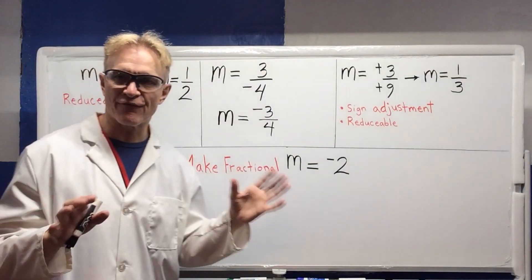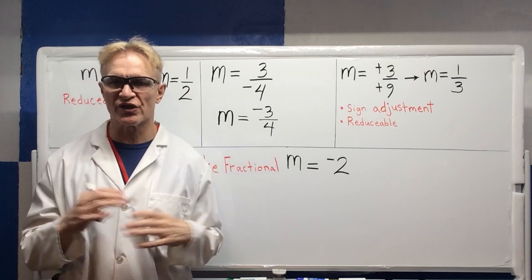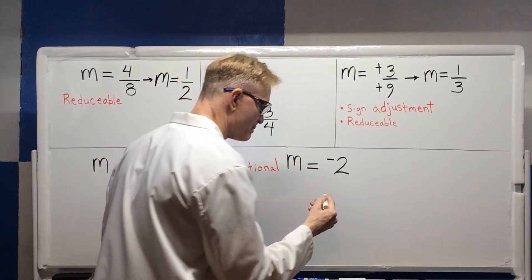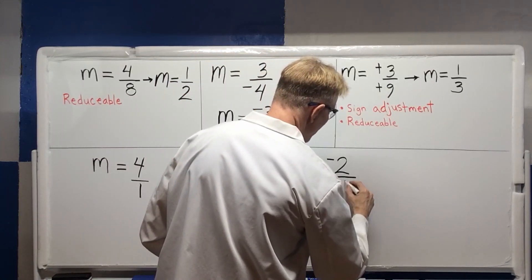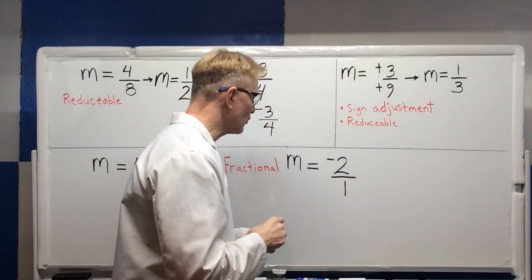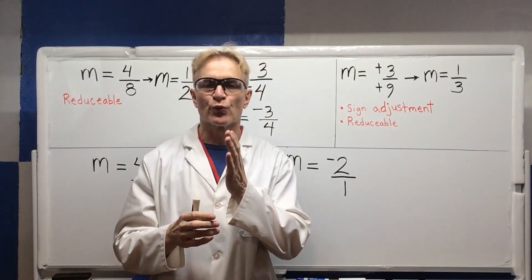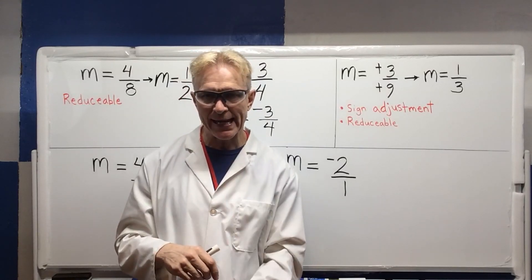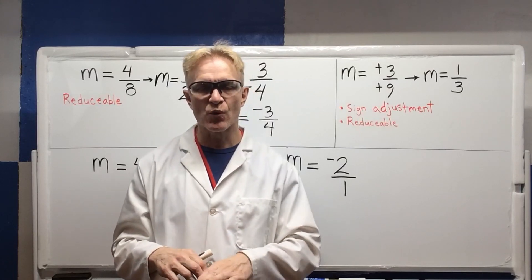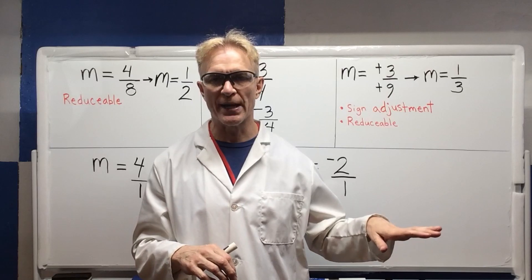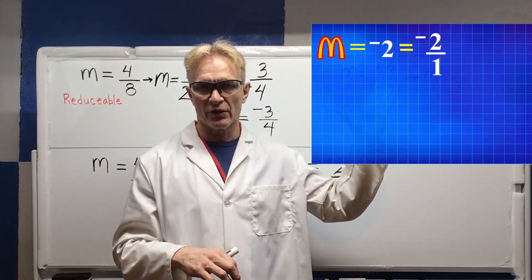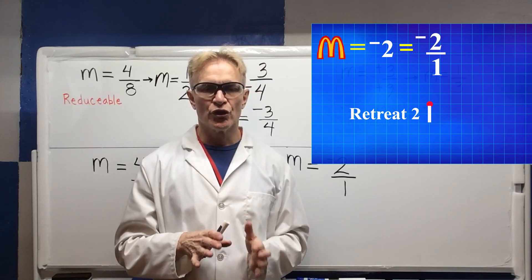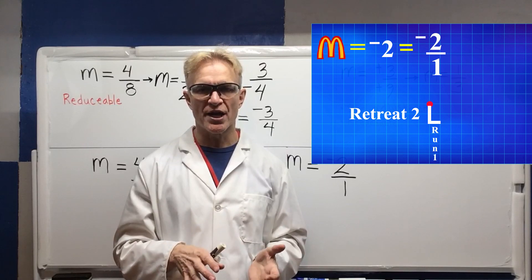The next one shows that make fractional works with negatives as well. Similar to the previous example, except it's a negative slope. We take negative two and put it over one. That means we're going to retreat downward two units and run to the right one. Negative means move down, positive means move up. Looking at the graph: down two, run one.